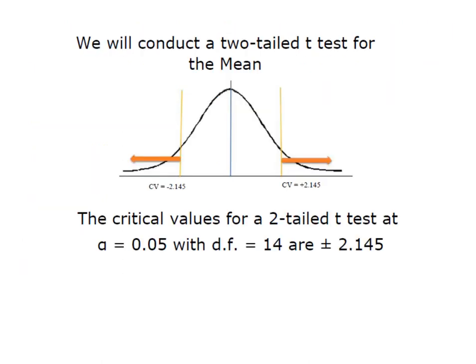When I run a two-tailed test using the critical value approach, I have to have the critical values to compare my test statistic to. In this case I have a two-tailed test, alpha 0.05, and degrees of freedom of 14. Remember that my n was 15, so degrees of freedom is simply n minus 1.